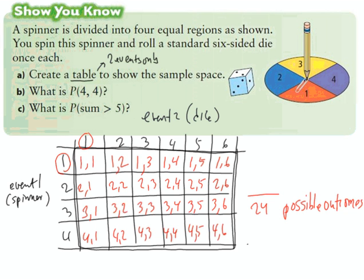Question B asks: what is the probability of a 4-4? When I go to the 4-4 in my table, it's right there — that is the only one out of all 24 combinations that is a 4-4. So my favorable outcome is one chance out of 24.